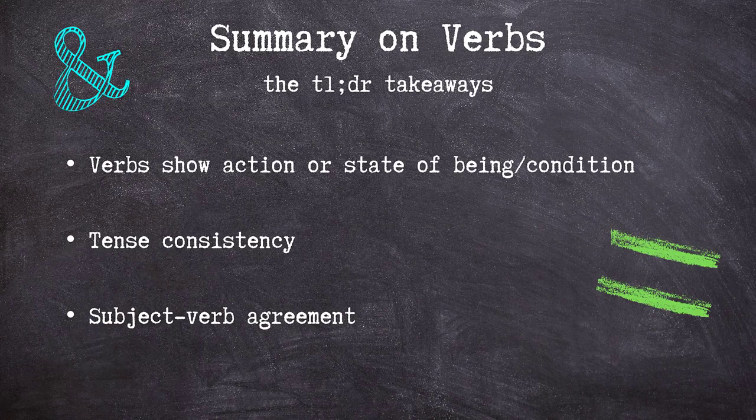Let's sum up what we've covered today. First, verbs are parts of speech that show a noun's action or its state of being or condition. Next, when writing, we should use tense consistently, keeping in mind the type of work we want a sentence to do and the guidelines that apply to the academic writing style we're using. And finally, we should also be aware of how we construct the nouns and verbs in our sentences to make sure their numbers agree with each other.